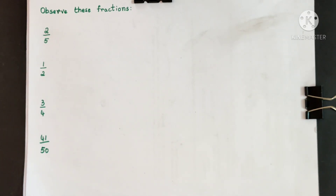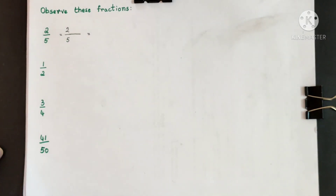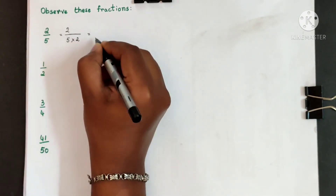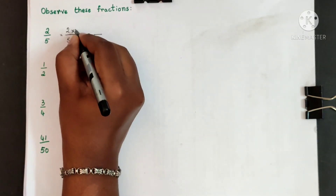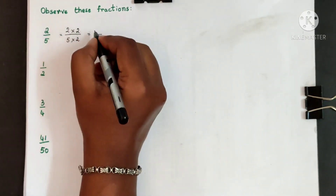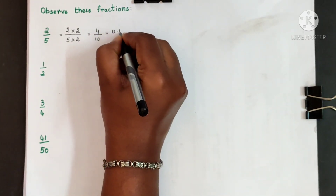See the first one: 2 5ths, or 2 by 5. How do you convert 2 5ths — to which number can the denominator be converted? 5 times 2 gives you 10. So we can convert the denominator to 10. Write the problem as it is. We know that 5 times 2 gives us 10, so multiply the denominator by 2 and multiply the numerator also by the same number. 2 twos are 4. So the decimal fraction of 4 tenths is 0.4.